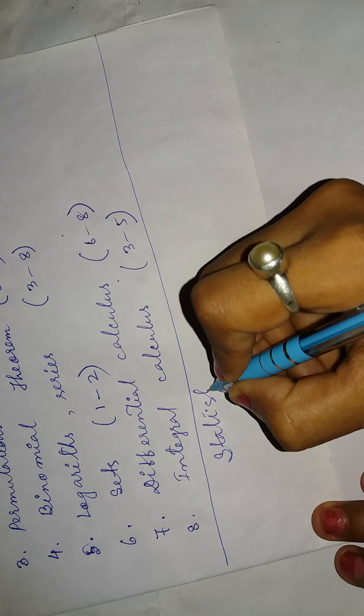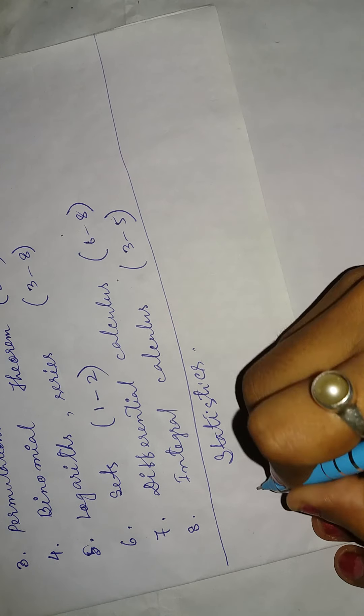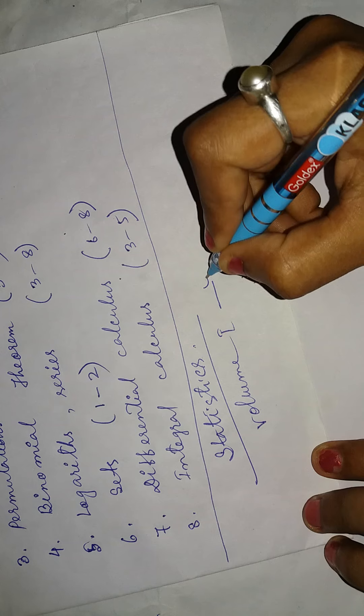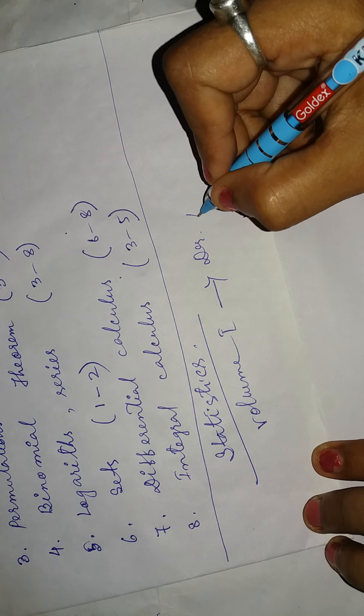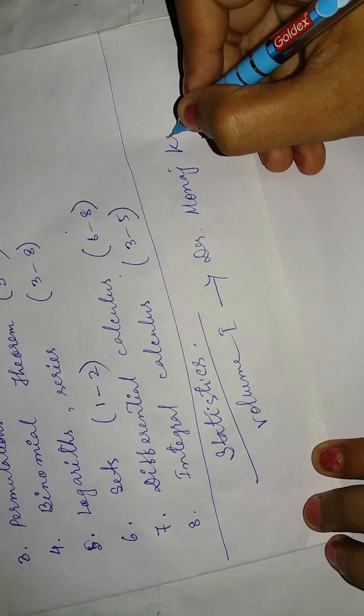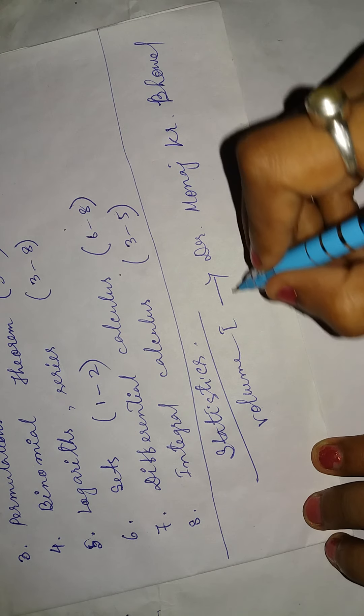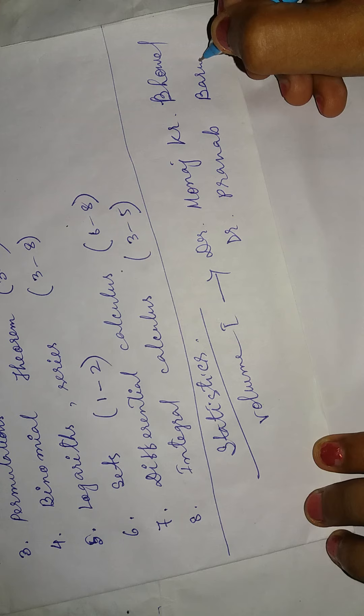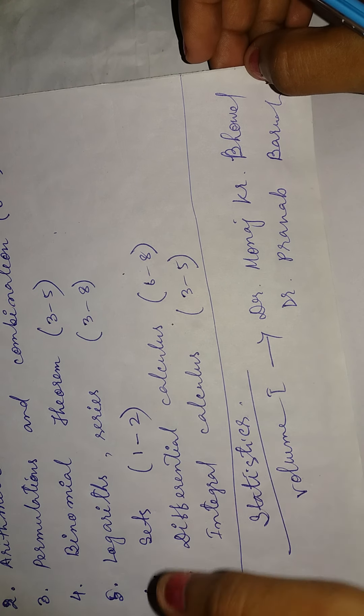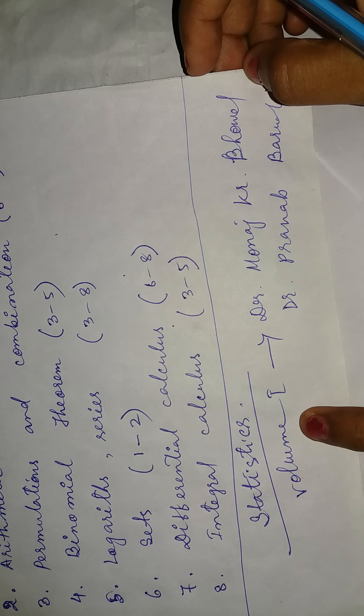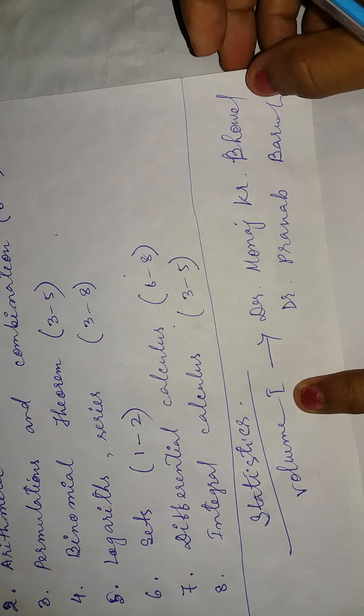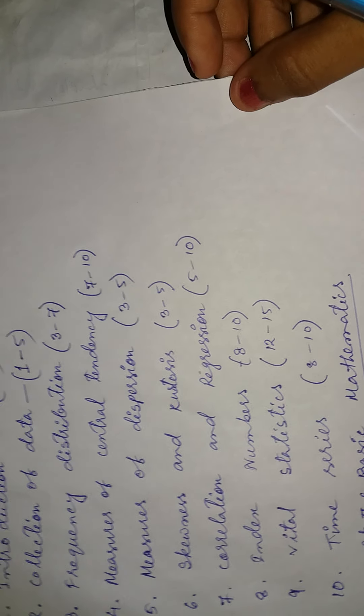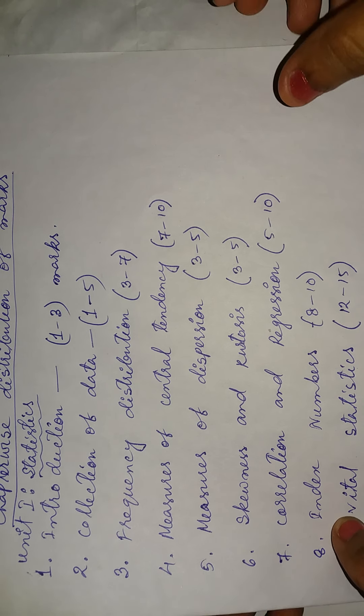First, before going to the lesson, I must share the name of the book you should follow. The name of the book is Statistics Volume 1, and it is written by Dr. Manoj Kumar Bhaval and Dr. Pranav Bhurva. These are the writers of the book. I repeat, the name is Statistics Volume 1 - 1 means for the first year - written by Dr. Manoj Kumar Bhaval and Dr. Pranav Bhurva. This is the book you should follow.